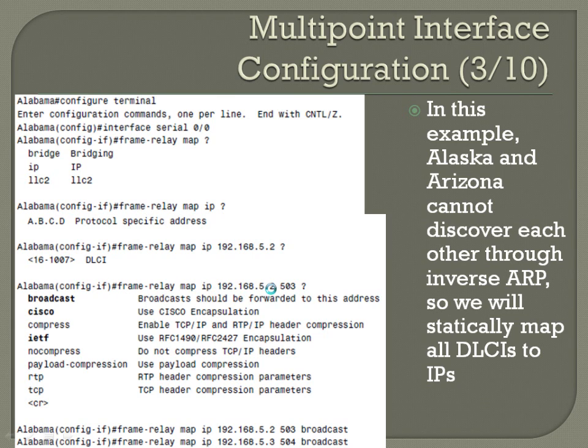And then you're going to have to do the same thing with the DLCI to the other router. So it would be frame-relay map IP 192.168.5.3, 504, broadcast.